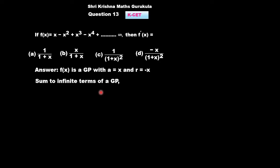So, we already know the sum to infinite terms of a GP. What is the formula? S∞ = a/(1-r), correct? Yes, we are applying this formula to the given function.